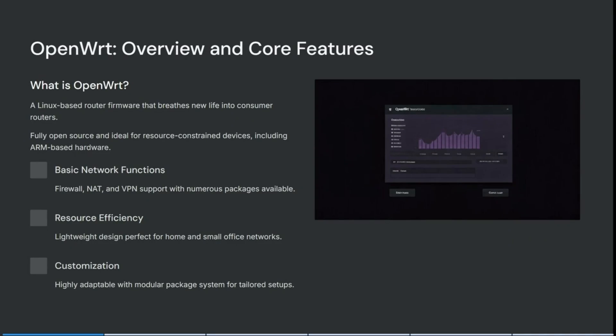We're looking at OpenWRT now. It is a Linux-based router firmware that breathes new life into a consumer router. It's fully open source and ideal for resource-constrained devices, including ARM-based hardware. It has basic network functions such as firewall, NAT, VPN support, and numerous packages. It is a lightweight design, perfect for home and small office networks, and highly adaptable with modular package systems for tailored setups.